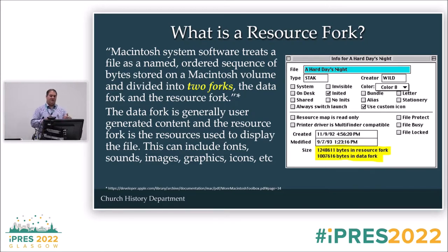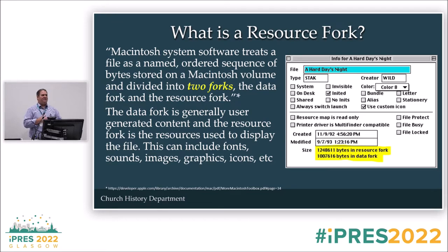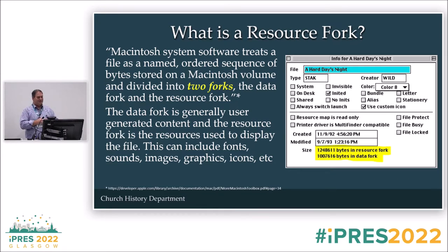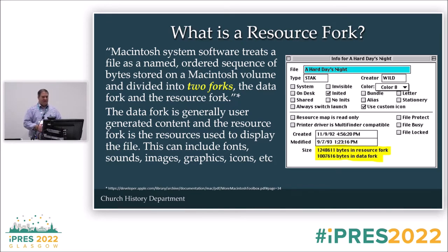The resource fork contains a lot of the sounds, the fonts, a lot of the graphics, and audio — different things like that. Sometimes it even contains some of the windows and graphical interface that you'll see. It also can contain a lot of icons for custom icons of the folders and things like that that some might find useful.